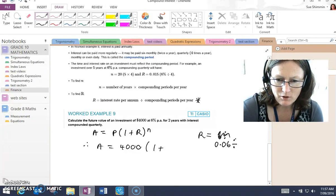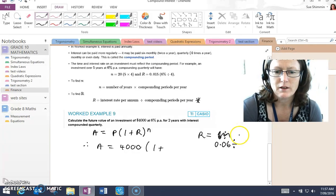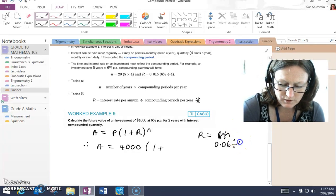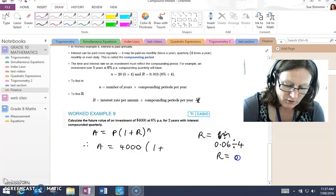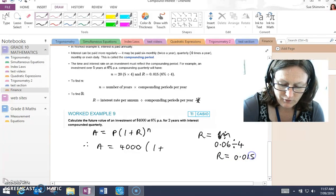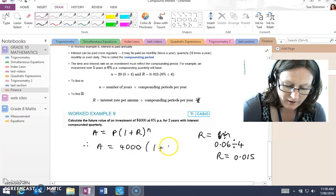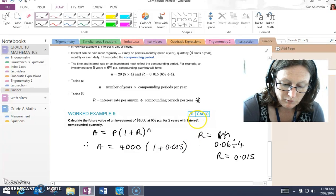We need to divide that by how many compounding periods per year. There are four compounding periods per year. We've got 6%, which is 0.06, divided by four because it's quarterly. So R in this case will be 0.015.